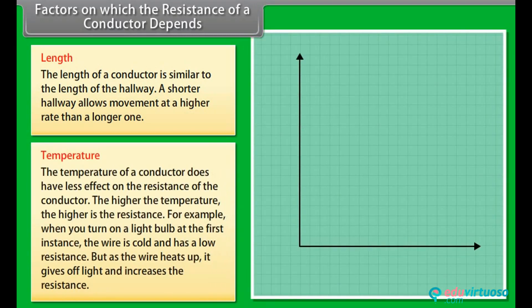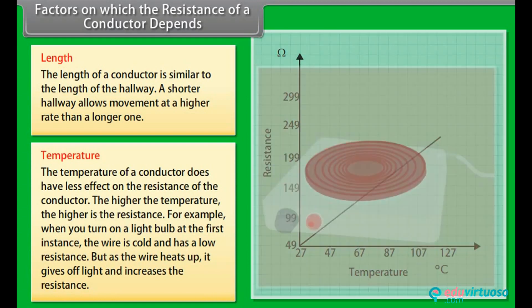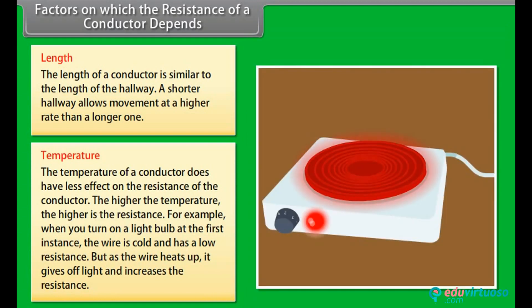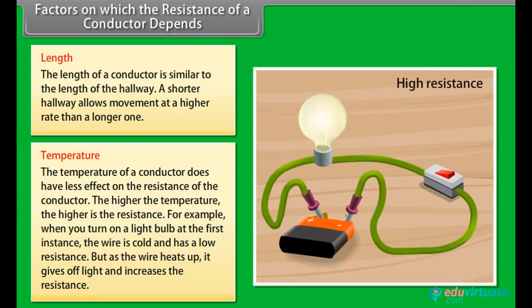The temperature of a conductor has a significant effect on its resistance. The higher the temperature, the higher the resistance. For example, when you first turn on a light bulb, the wire is cold and has low resistance. But as the wire heats up, it gives off light and its resistance increases.